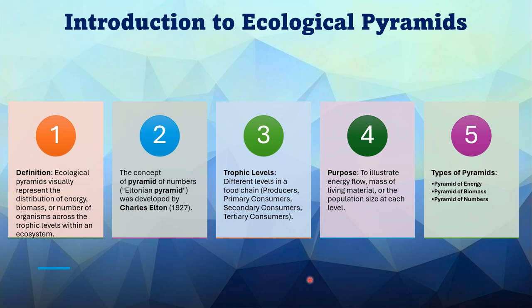Each trophic level is structured as follows: first trophic level — producers; second trophic level — herbivores; third trophic level — consumers or carnivores; and the top — top carnivores. Ecological pyramids study three parameters: pyramid of energy, pyramid of biomass, and pyramid of numbers.